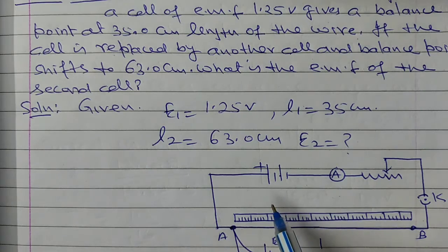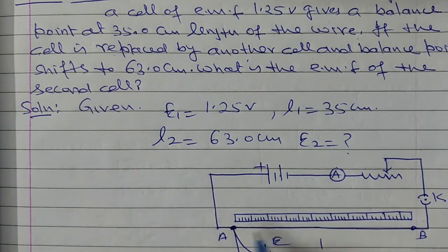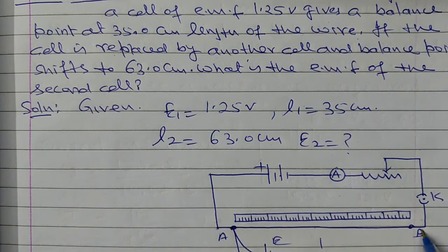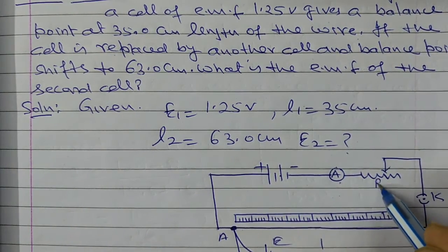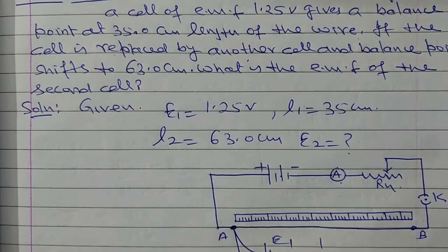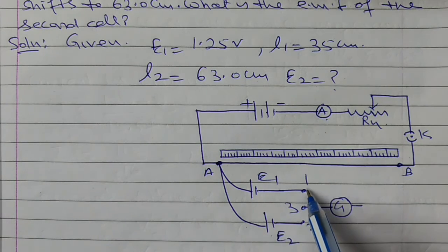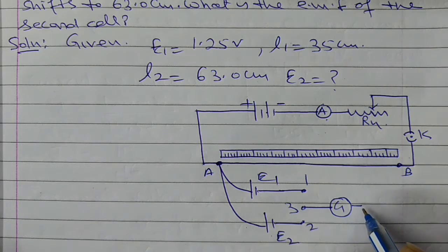Here in this question given that this potentiometer circuit arrangement, and this AB is the potentiometer wire, and this driving cell, this ammeter and this rheostat and this meter scale, and these two cells E1 and E2. And this is a two-way key and here this galvanometer.